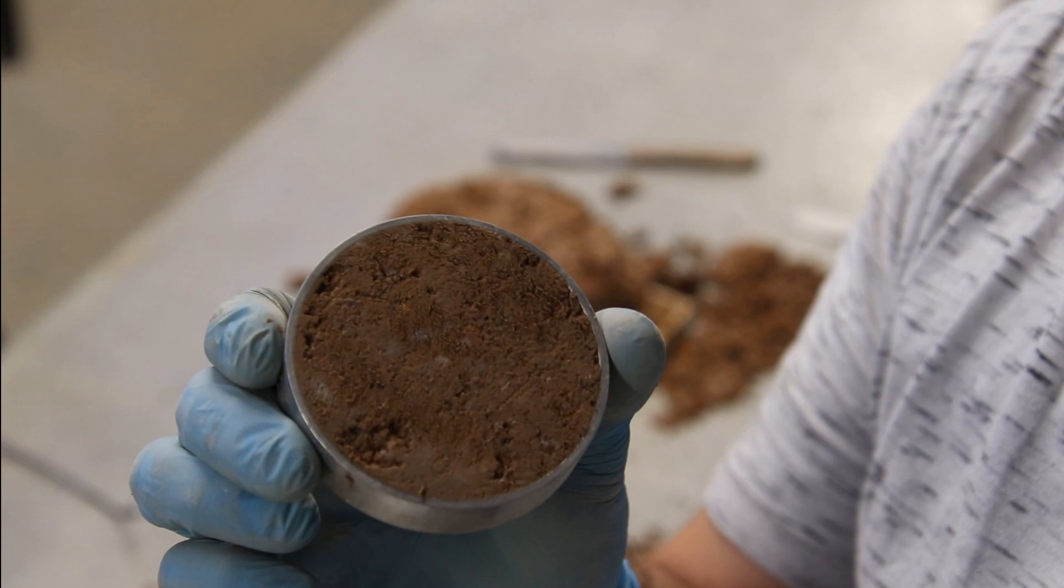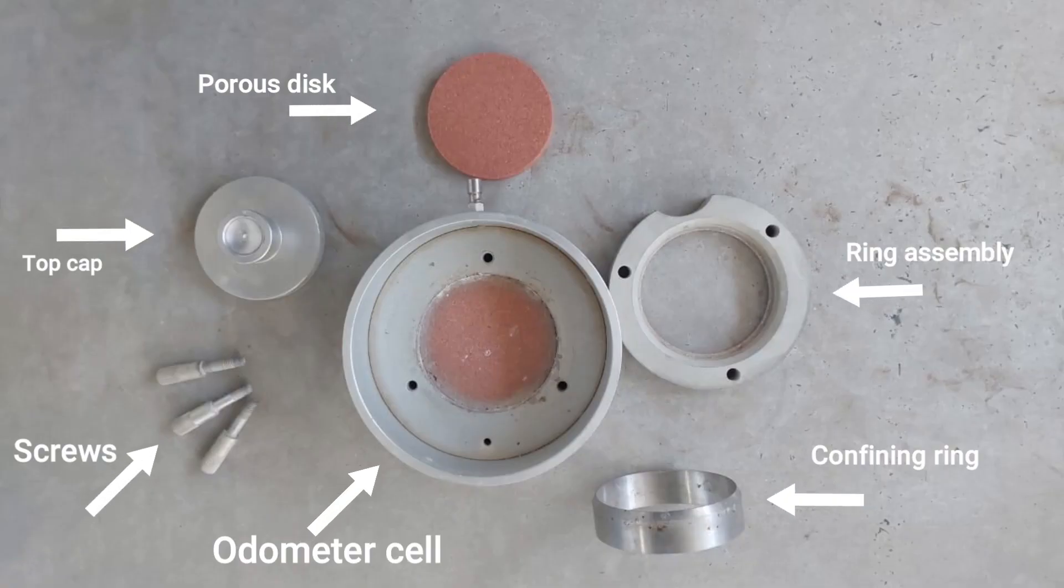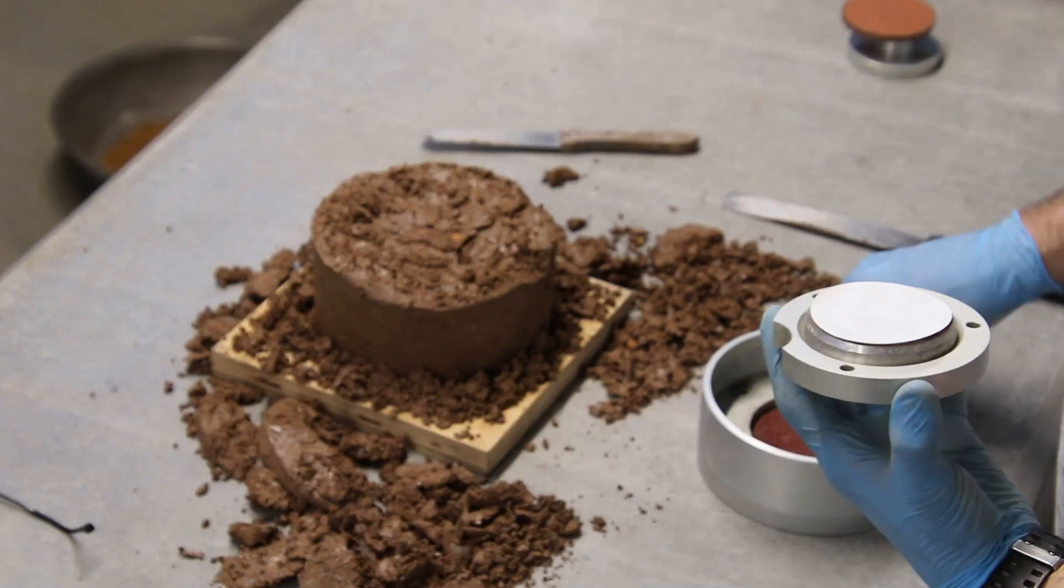Step 2: Odometer Cell Assembly. Gather all the parts of the odometer cell assembly. Here are the parts and the names of the different parts.